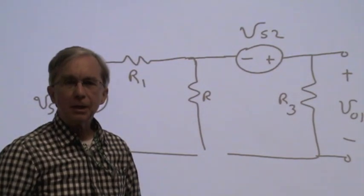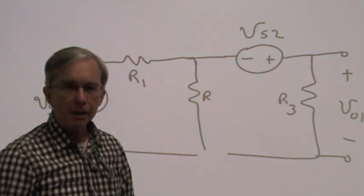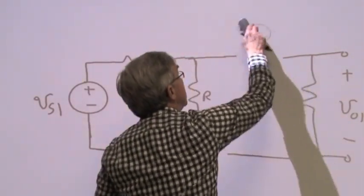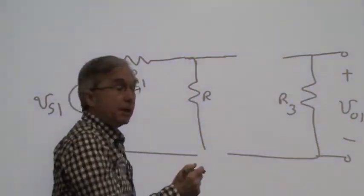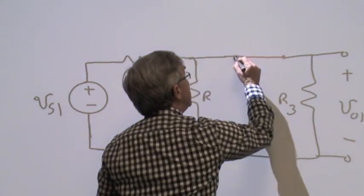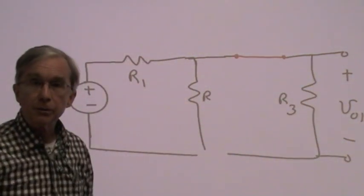To find the contribution just due to Vs1, we can set Vs2 to zero. We can do that by replacing Vs2 by a short circuit, because a short circuit has zero volts across it, no matter what the current is.